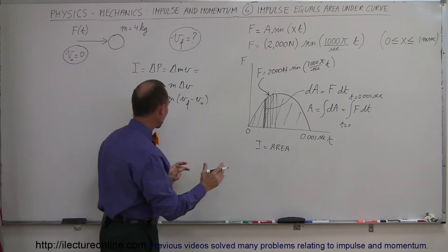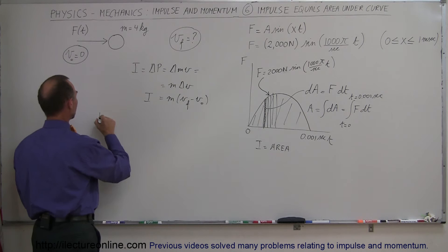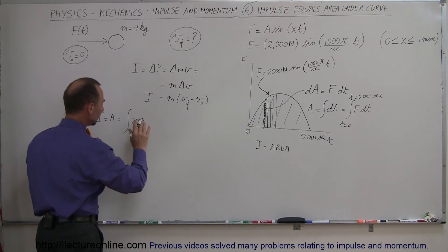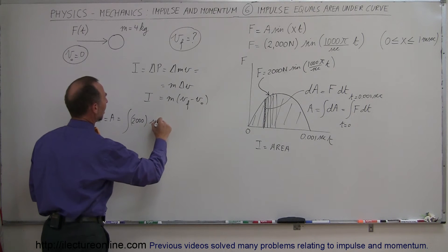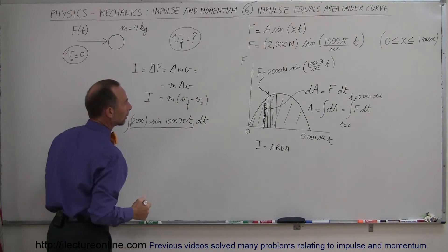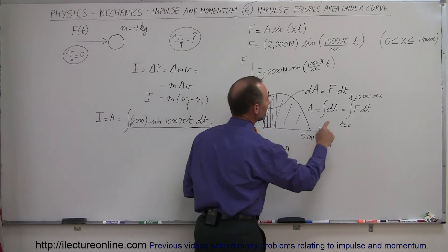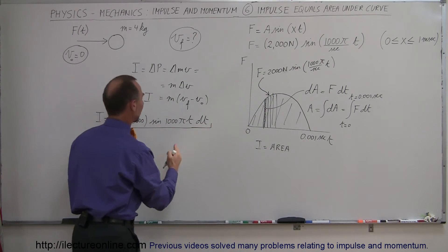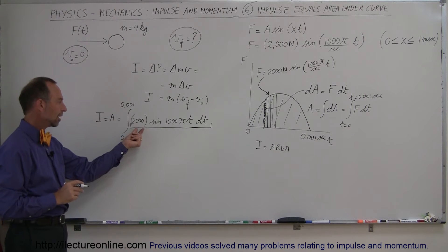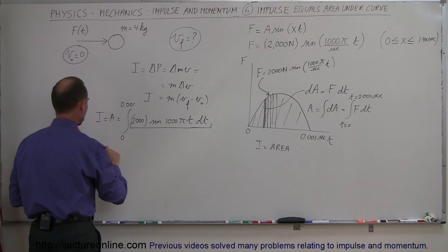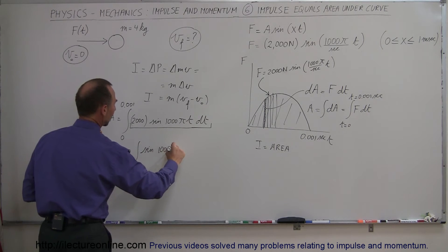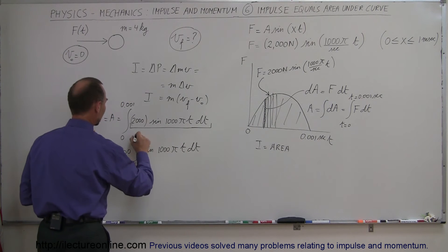So we integrate over that time. The impulse equals the area, which is the integral of the force: 2,000 times the sine of 1,000 pi times t times dt, evaluated from 0 to 0.001 seconds. Since 2,000 is a constant, it comes outside the integral, so I = 2,000 times the integral of sine of 1,000 pi t dt from 0 to 0.001.